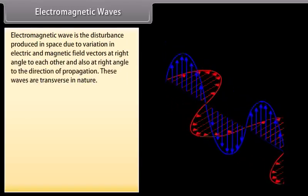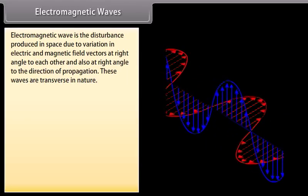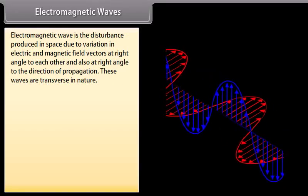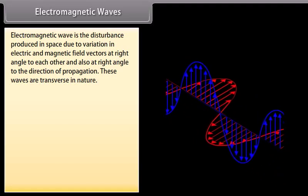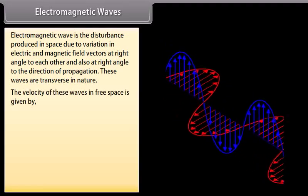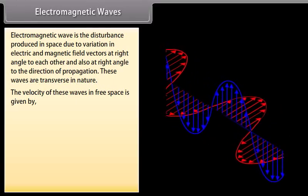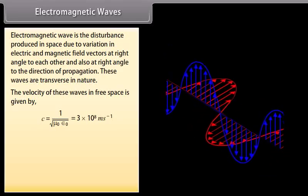Electromagnetic waves. Electromagnetic wave is the disturbance produced in space due to variation in electric and magnetic field vectors at right angle to each other and also at right angle to the direction of propagation. These waves are transverse in nature. The velocity of these waves in free space is equal to the velocity of light, which is equal to 3 into 10 raised to the power 8 meter per second.